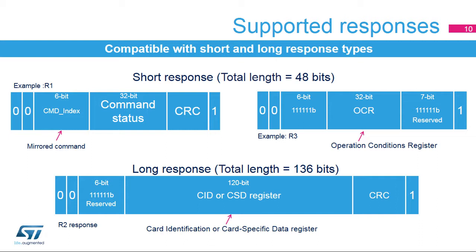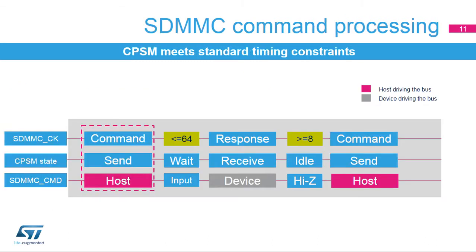Long responses have a total length of 136 bits and are composed of the 120-bit CID/CSD register content with the start bit, stop bit, and CRC7 checksum. When received, the CID/CSD card register is copied to one of the four SDMMC RESPX registers. The SDMMC interface also features automatic detection of a start bit, command index extraction, 32- or 128-bit response extraction, and automatic CRC7 verification.